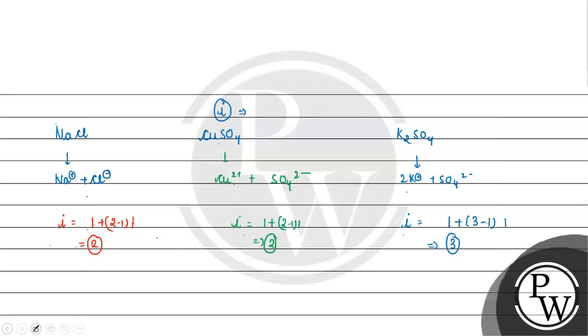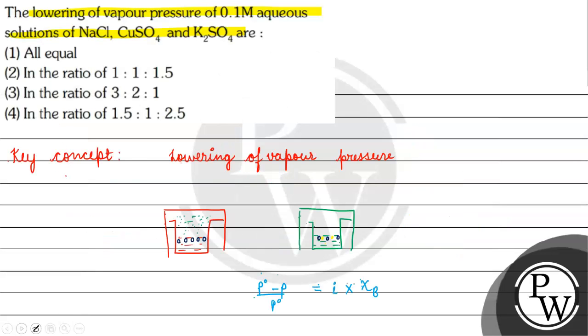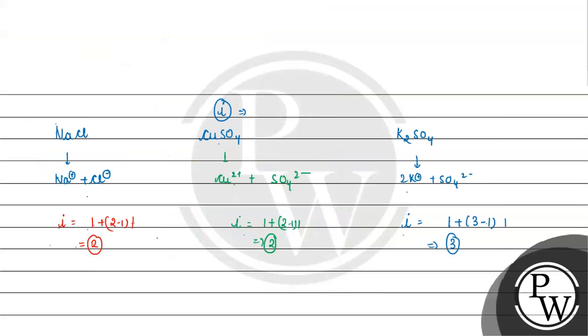Now we have to see the lowering of vapor pressure, which depends on i. If we look at the i ratio for them, it will be 2:2:3, or we can write it as 1:1:1.5.